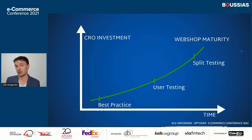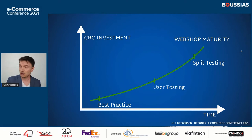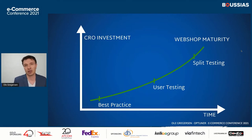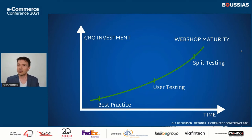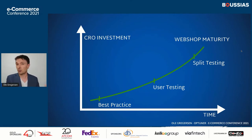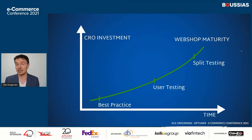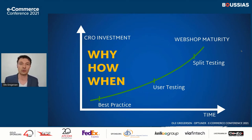I'm going to talk about three key methods: best practice, user testing, and split testing. I know there are many other things you can work with, but these are three important pillars, and in my experience that's a natural progression for these three methods. I'm going to walk you through that progression and spend around 10 minutes on each for the next half hour. I put them in this progression because I think it's important not to do any user testing before you've done your best practice work, and not to spend too much time on split testing until you've done at least user testing and the best practice work.